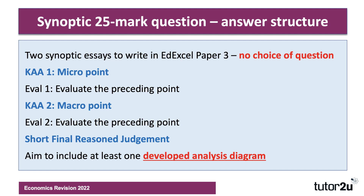In the Edexcel Paper 3, you have to write two synoptic essay-style questions. You have two data response questions and you have to do two 25-markers. There's no choice of question. The simple approach is to take a five-paragraph structure: your first KAA point — knowledge, application, analysis — which is nearly always a micro point. Then you evaluate it. Then take a macro point for your third paragraph, evaluate it with a fourth paragraph, and then come to a short, final reasoned judgment. Aim to include at least one developed analysis diagram. It's 16 marks for KAA and 9 for evaluation, exactly the same as Paper 1 and Paper 2.